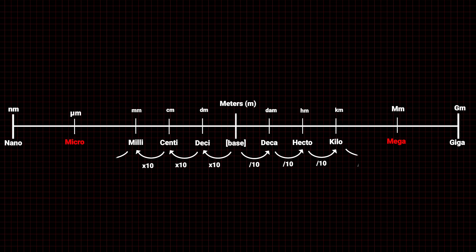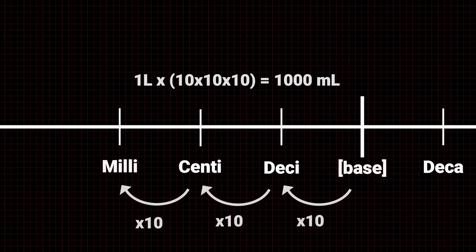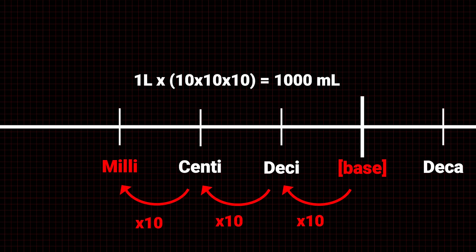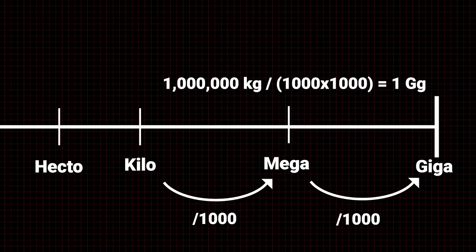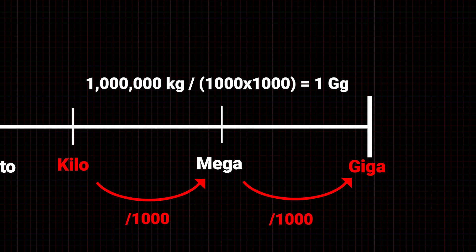Once you reach megameters or micrometers, multiply or divide by 1,000 for each step. This works for any metric unit, not just meters. For instance, one liter is 1,000 milliliters, and one million kilograms makes a gigagram.